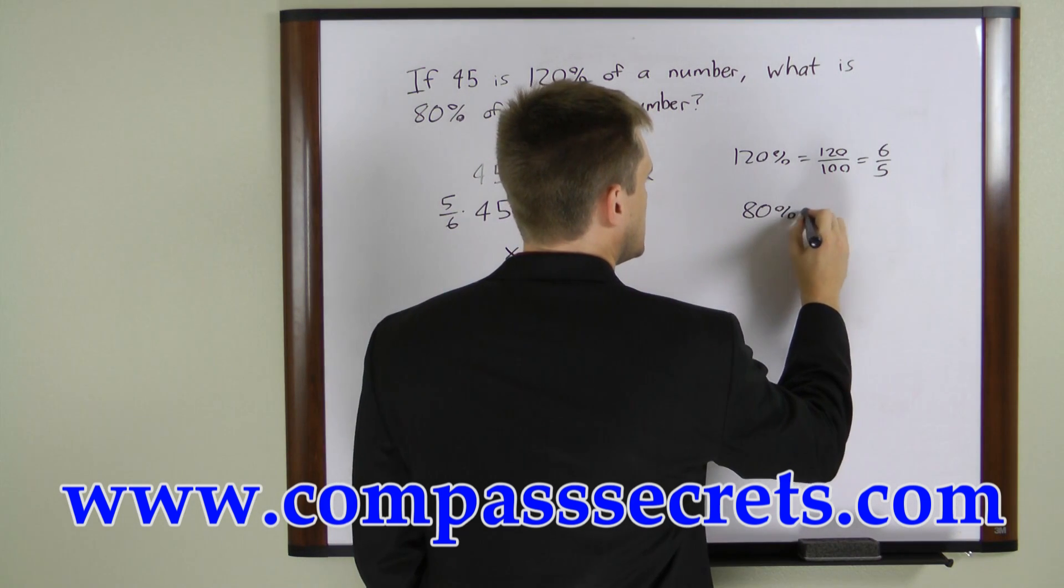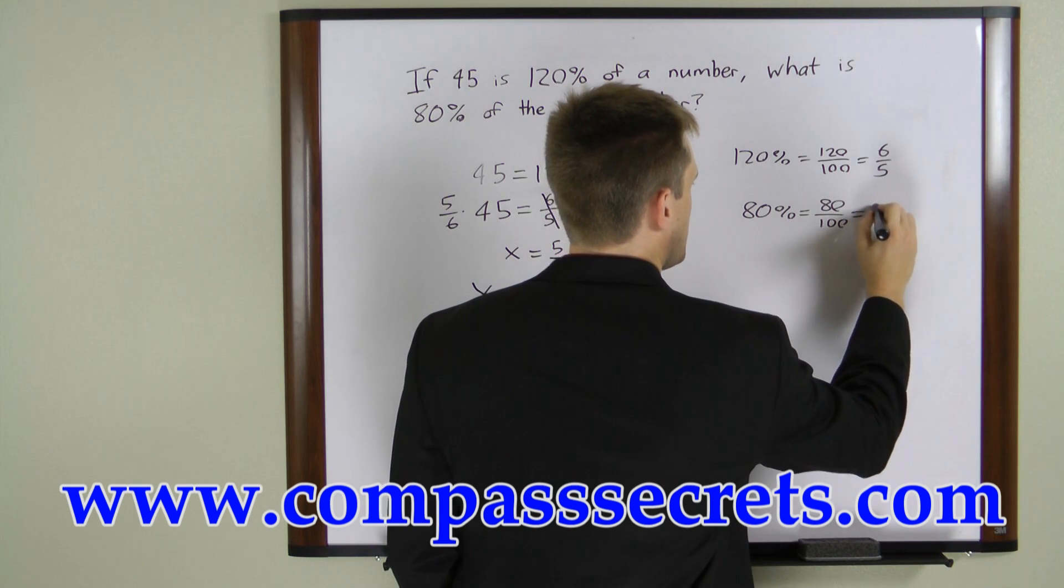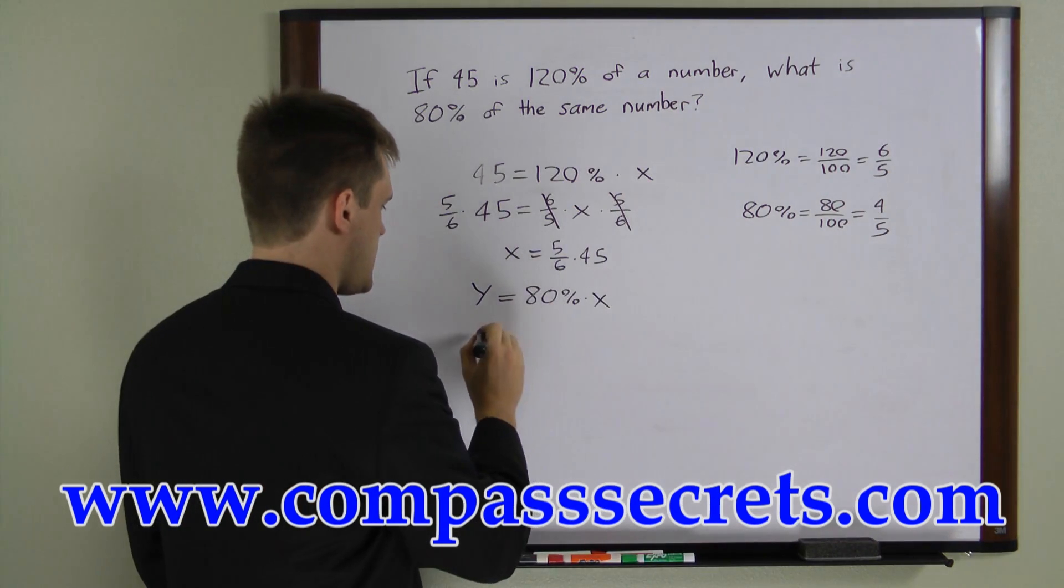80% equals 80 over 100, which is the same as 4 over 5. Now we can substitute that back into here.